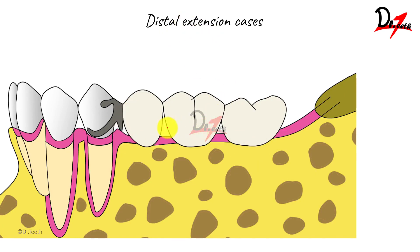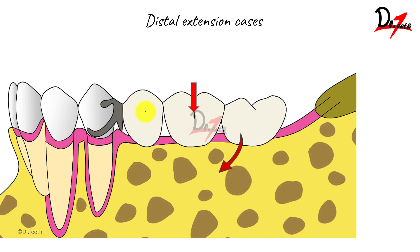Here you can see this is our cast partial denture. We have a force acting on the prosthesis. Here we have the tissues — the tissue is 250 times more displaceable, remember? So what will happen? This denture will try to come downwards.